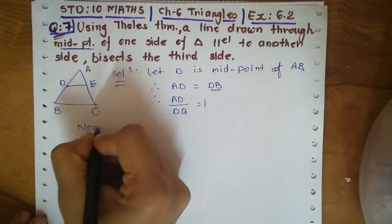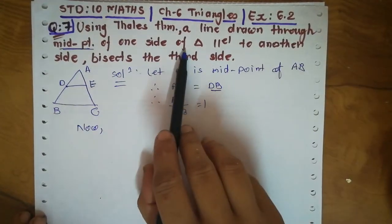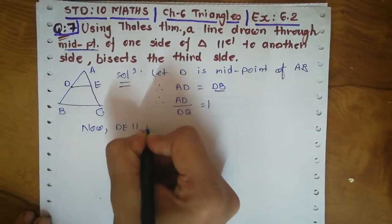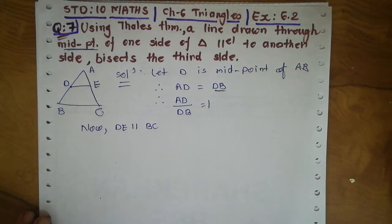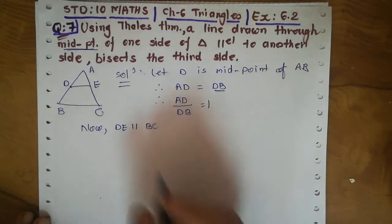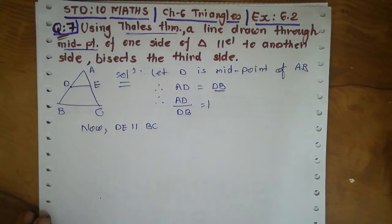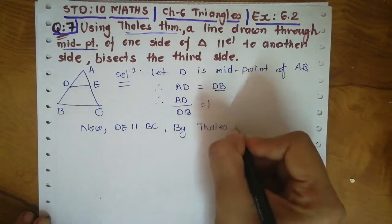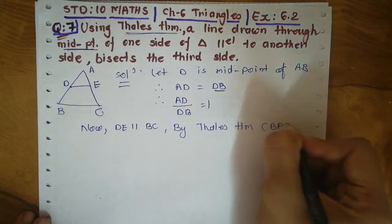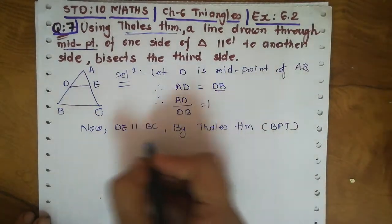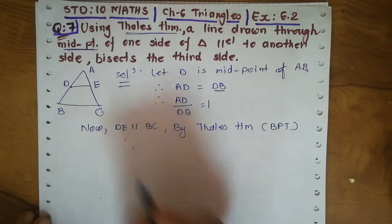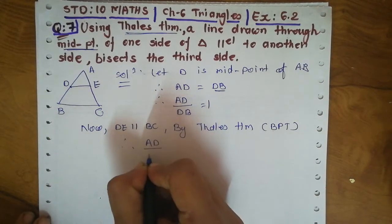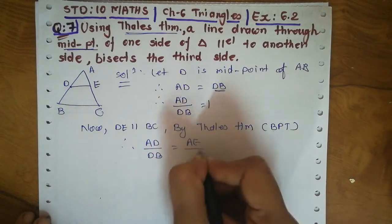Now, this line DE is parallel to the another side BC. We know that if the two lines are parallel, by the BPT theorem — because we prove this theorem by the Thales theorem as per the question — by Thales theorem or BPT (basic proportionality theorem), if the two lines are parallel, then the corresponding sides are proportional. Therefore, AD upon DB equals AE upon EC.